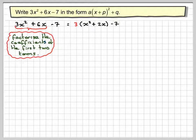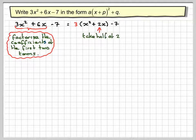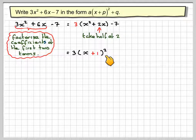Now we've proceeded like we've done before. We look at this part here and we take half of 2. So we take half of 2, we get 1. So we write 3(x + 1)² - 7.